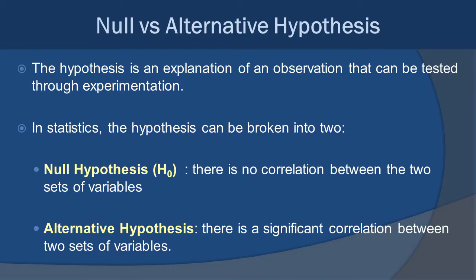Before we get too far along, let's talk about the difference between the null and the alternative hypothesis. Now, a hypothesis is the explanation of an observation that can be tested through experimentation. It's essentially what scientists do - we try to test our hypotheses, essentially trying to disprove them all of the time. When we look at things in the lens of statistics, we can break this down into two components, the null and the alternative hypothesis.